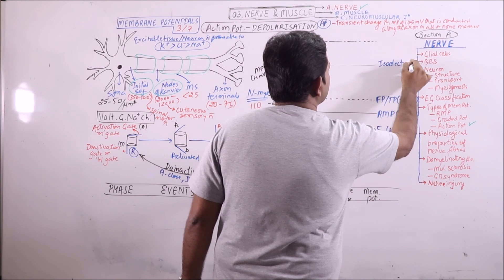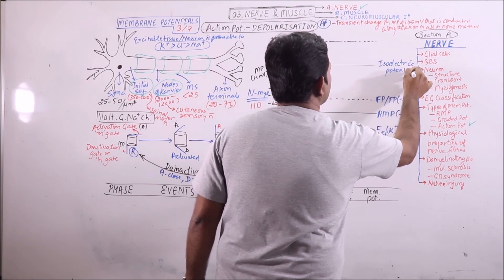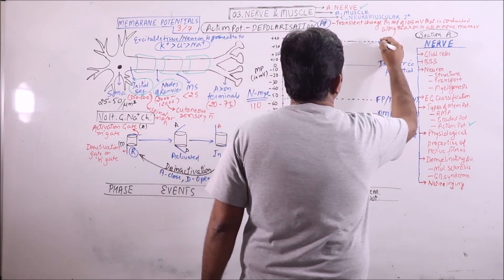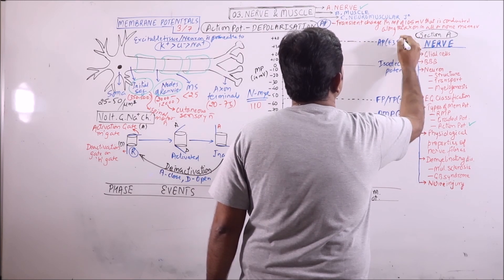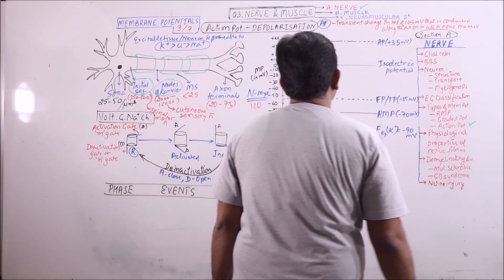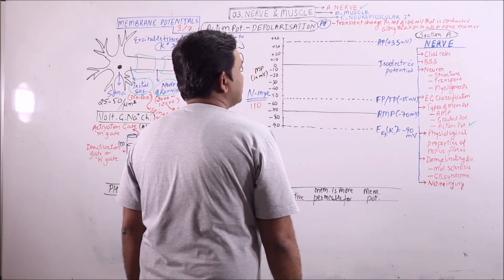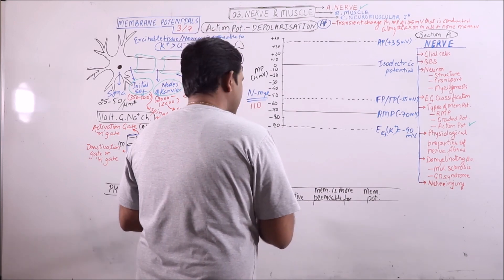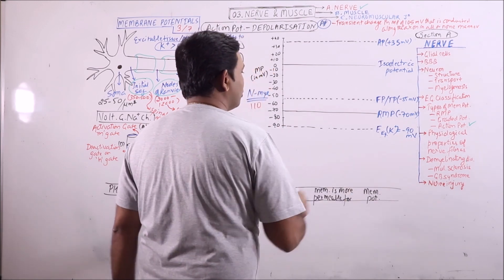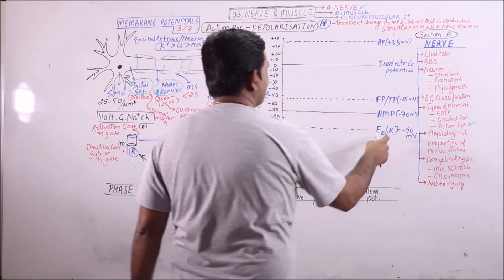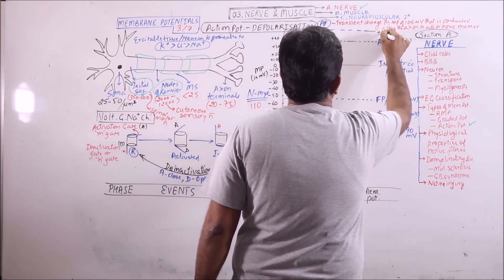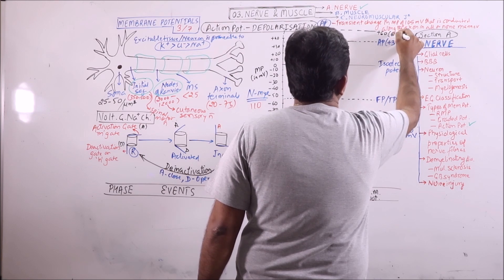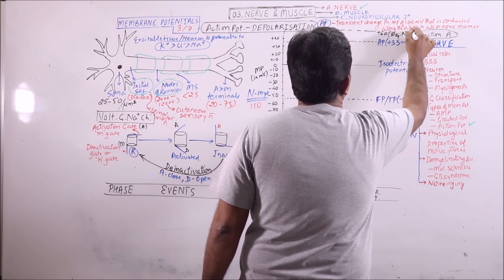There is an isoelectric potential on the graph. The peak of action potential is plus 35 millivolts. As discussed, minus 90 millivolts is the equilibrium potential for potassium. Similarly, the equilibrium potential for sodium is plus 60 millivolts. The RMP is close to the potassium equilibrium potential rather than sodium.